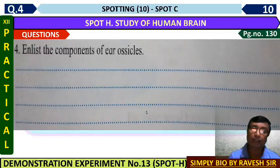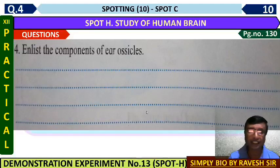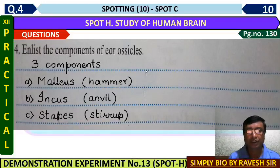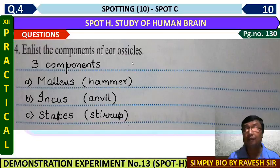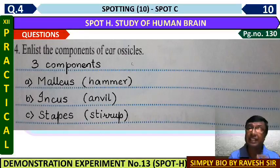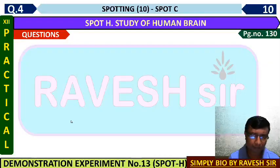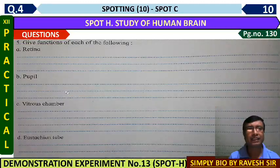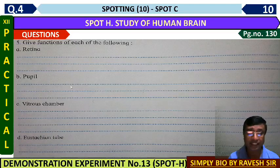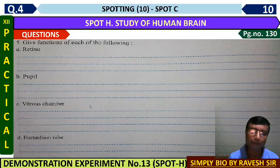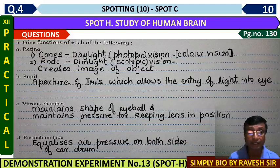Ask your subject teacher whether you need to write the ear-related questions or not. For general knowledge, ear ossicles are the three smallest bones in the body, found in the middle ear - called ear ossicles. There are three: malleus, incus, and stapes. Then there are questions about the function of the retina, the pupil, vitreous humor related to the eye, the Eustachian tube related to the ear - this information in short will be helpful if asked in the oral examination.